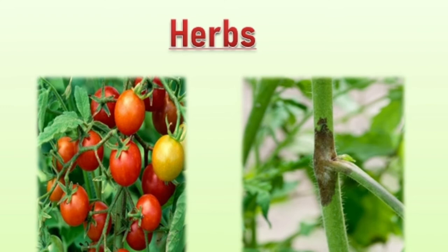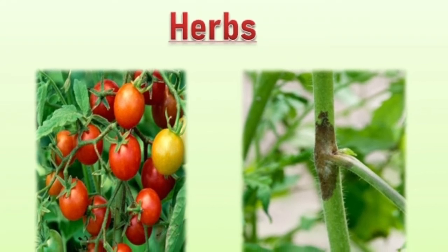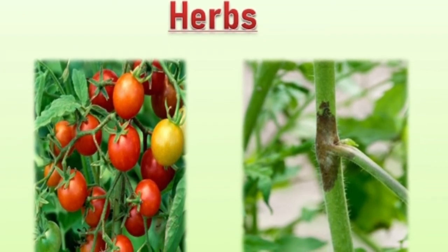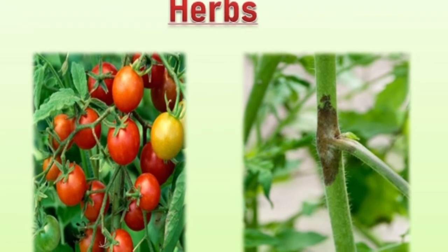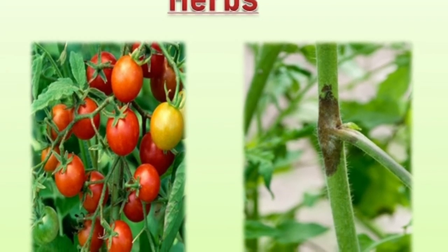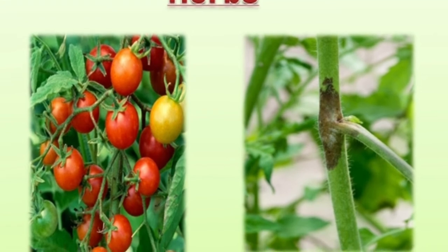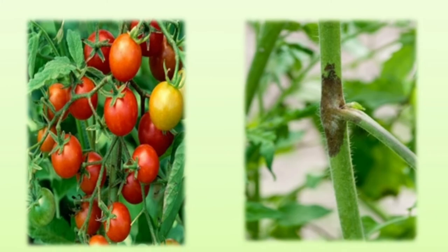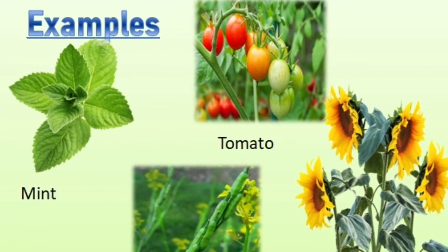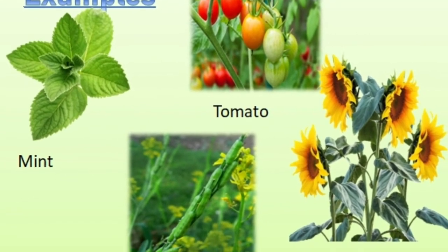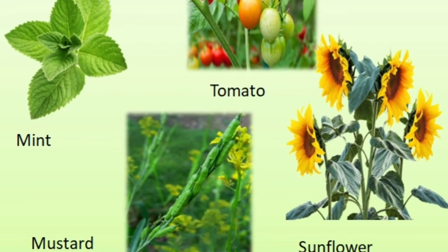Herbs are short sized, small plants with soft, green, delicate stems. They can be easily uprooted from the soil. They contain enough nutritional benefits. They live only for one or two seasons. Examples include Mint, Tomato, Mustard, Sunflower, etc.